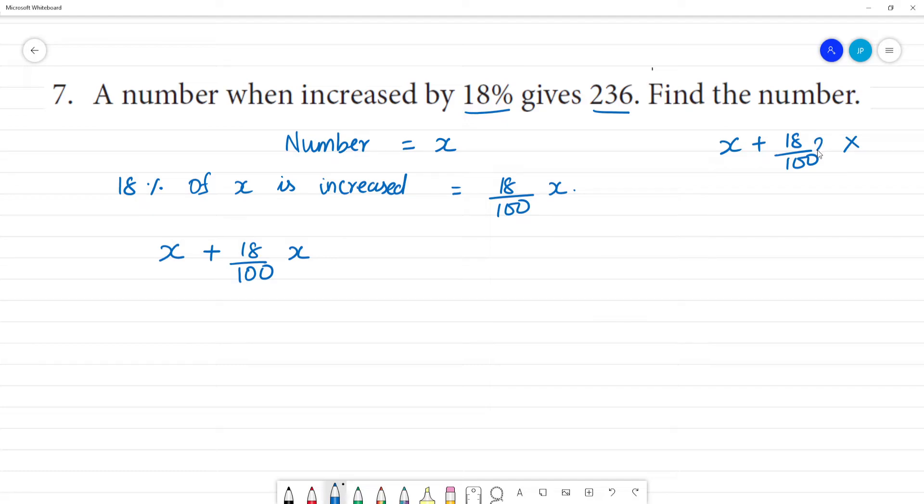So increase in percentage, the number X plus 18 by 100 into X. X is increased, that is equal to 236. Now we can do LCM, so this is multiplied by one denominator, multiplied by 100, multiplied by 100.